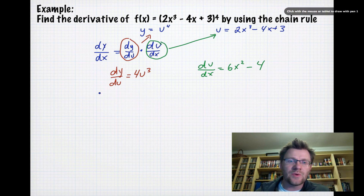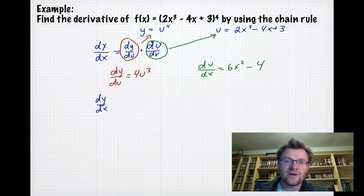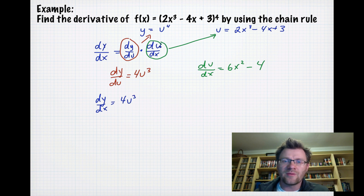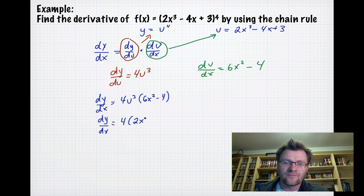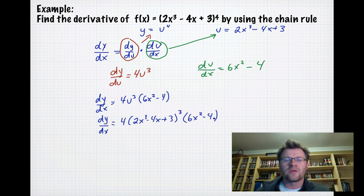So dy/dx equals dy/du times du/dx, which is 4u³ times (6x²-4). Since we need the derivative in terms of x, we substitute u = 2x³-4x+3 back in, giving us 4(2x³-4x+3)³ times (6x²-4). This is the Chain Rule result.